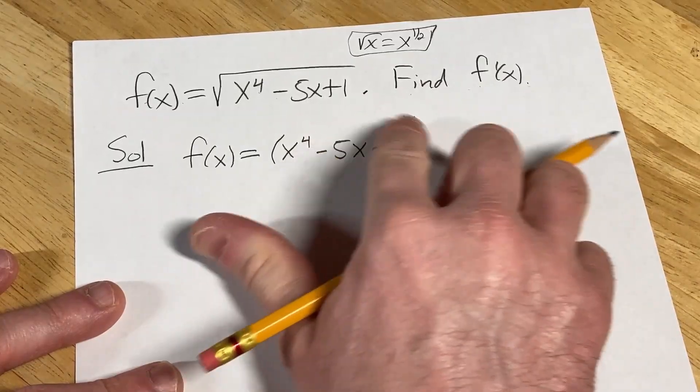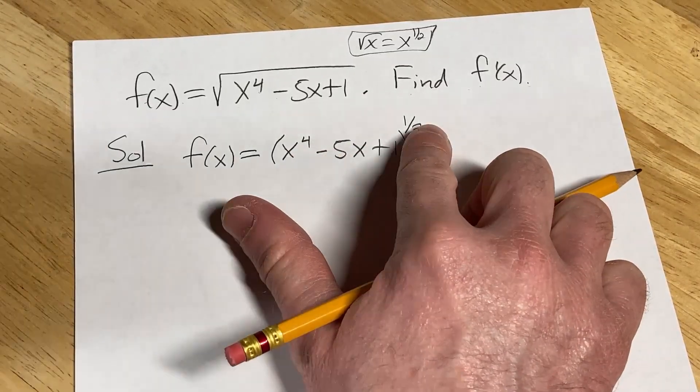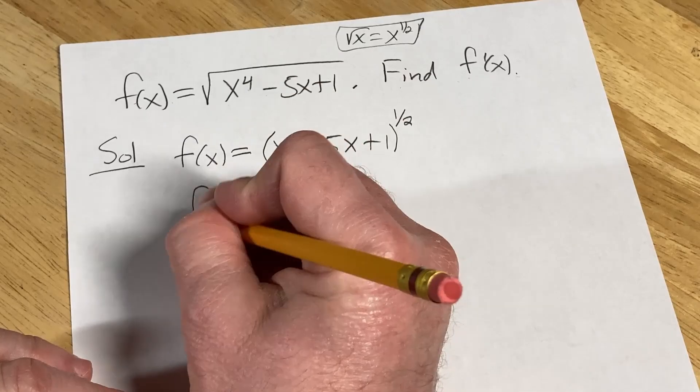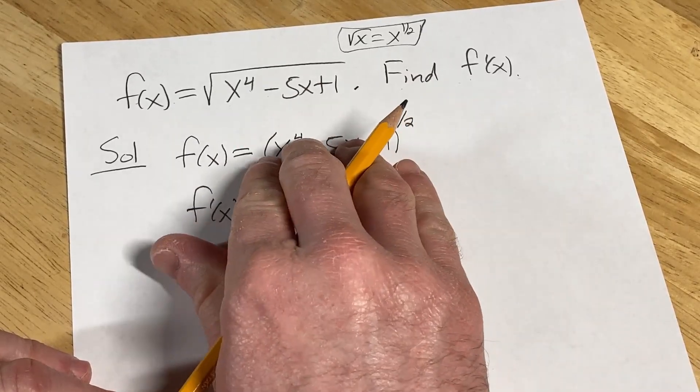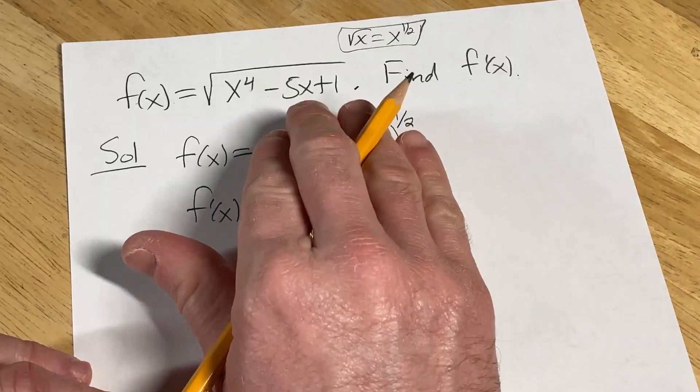Now we have something to a power. Whenever you have something to a power, you can use the chain rule. The chain rule says, for f prime of x, you take the derivative of the outside function, which is something to the 1 half.